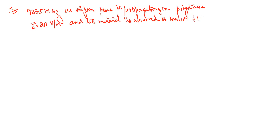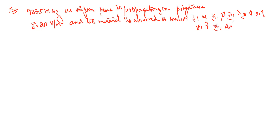Since it is lossless, they ask us to find: the attenuation constant alpha, second the phase constant beta, third the wavelength lambda, fourth the velocity of propagation v, fifth the intrinsic impedance eta, sixth the propagation constant gamma, and seventh the amplitude of the magnetic field intensity. For polystyrene, mu_r equals 1 and epsilon_r equals 2.56.